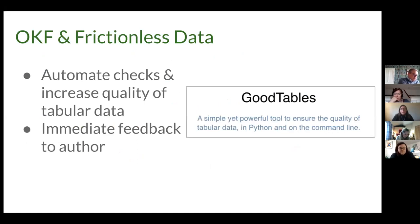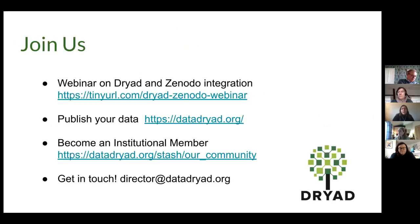We're also starting an initiative with the Open Knowledge Foundation and Frictionless Data — their Good Tables product checks tabular data quality before our curators even look at it, increasing the quality of tabular data, which is a significant portion of what comes to Dryad. We have a webinar coming up March 4th on Dryad and the Zenodo integration, and if you're interested in membership or data publishing for your institution or journals, feel free to reach out.